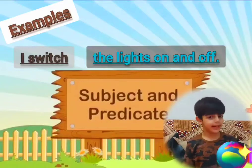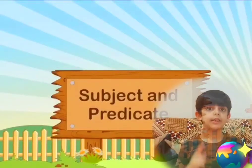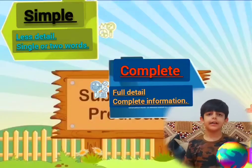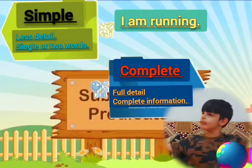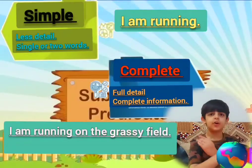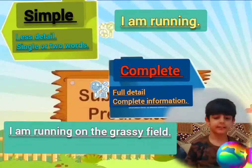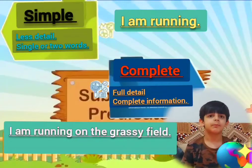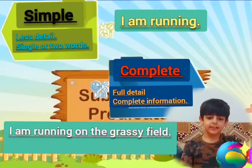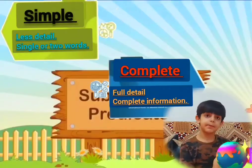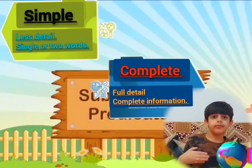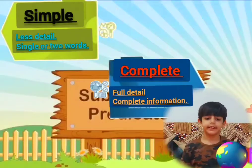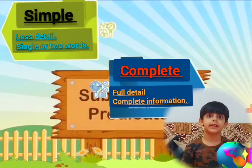Now let's talk about simple predicates and complete predicates. A simple predicate has very little detail — for example, 'I was running' with zero detail. But a complete predicate is like 'I was running in the past' with much more detail. So 'is running' is the simple predicate in 'The cat is running.'